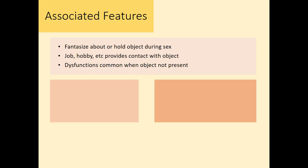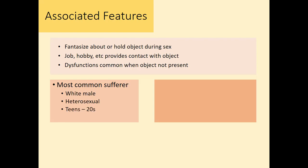One definition of a paraphilia is that you cannot sexually function — that would be one kind of diagnosis. The other kind, feeling personal distress, might sometimes also be associated with sexual dysfunction if you can't have the object present, but dysfunction is not always required. The most common sufferer is a white male who is heterosexual in his teens or twenties. Oftentimes it's associated with substance abuse — if you're feeling personal distress about anything, it boosts the probability of substance abuse as you try to shed those negative feelings. We call it self-medicating.